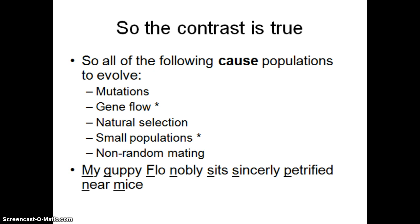A student of mine, Aaron Zani, came up with a mnemonic device I'd suggest you memorize: 'My guppy flow, no beliefs, it's sincerely petrified near mice.' Each letter stands for the things that cause evolution: mutations, gene flow, natural selection, small populations, and non-random mating.